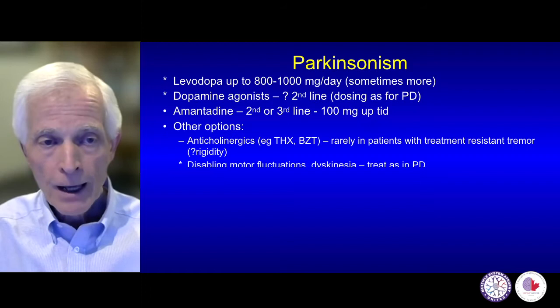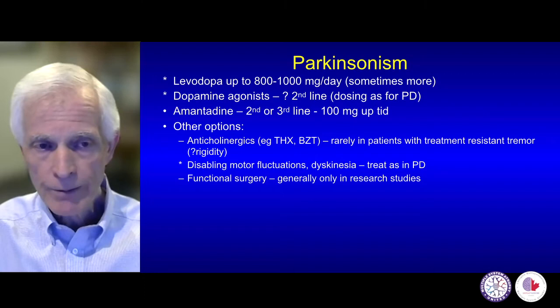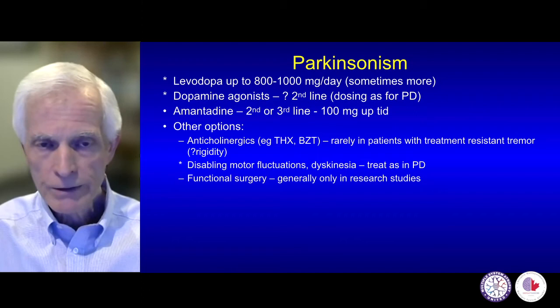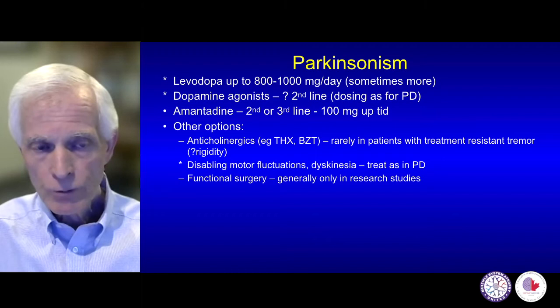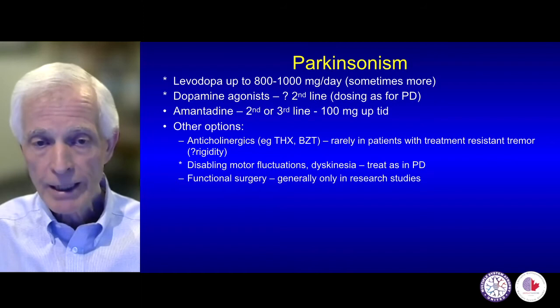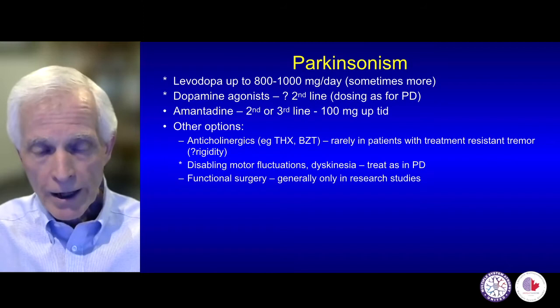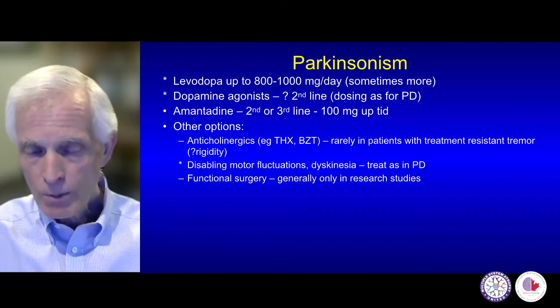We usually give patients a trial of amantadine up to 300 milligrams per day, and some who fail levodopa benefit from amantadine. Other options include anticholinergics such as trihexyphenidyl and benztropine. Rarely will these be useful when levodopa is ineffective, but sometimes with treatment-resistant tremor and/or rigidity you may find some benefit, especially in young patients where you aren't concerned about cognitive disturbances. When patients develop a good response to levodopa, a proportion will develop disabling motor fluctuations and dyskinesia, treated similarly to Parkinson's, even to the point of using continuous infusions such as duodenal levodopa-carbidopa intestinal gel. Rarely will we consider functional surgeries such as deep brain stimulation.